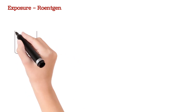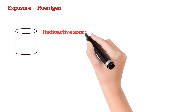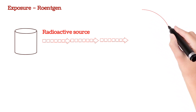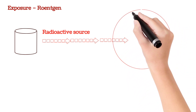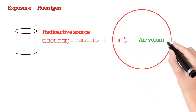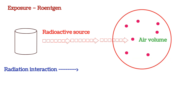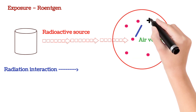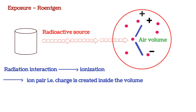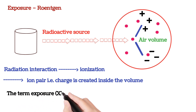What is exposure? Let's consider a radioactive source which emits radiation, and this is a small volume in air. We know that when radiation interacts with air molecules, due to the ionization process, negatively charged electrons and positively charged ions are created inside the volume of air. This process is called ionization.